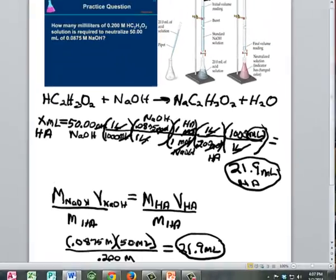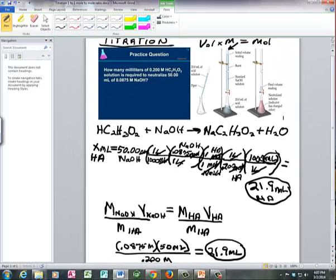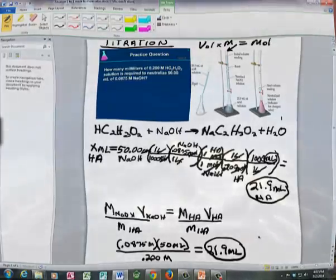And if you look at it, we have 50 in the numerator, 0.0875 in the numerator. In our other method, we had 50 in the numerator, 0.0875 in the numerator. And we have, in our second method, 0.2 molar in the denominator and 0.2 molar in the denominator in the initial method that we used. So those are two ways to do titration problems when you have a one-to-one mole-to-mole ratio.